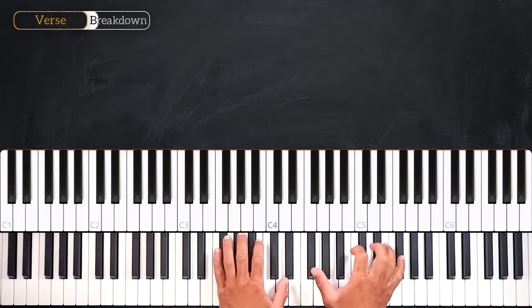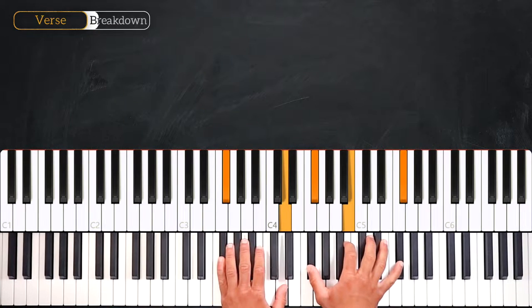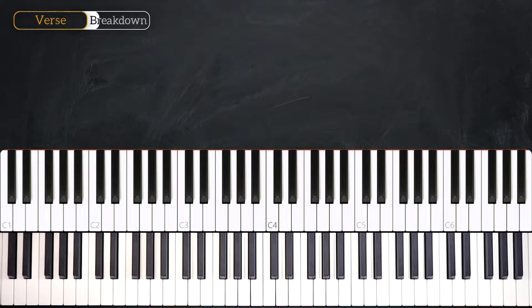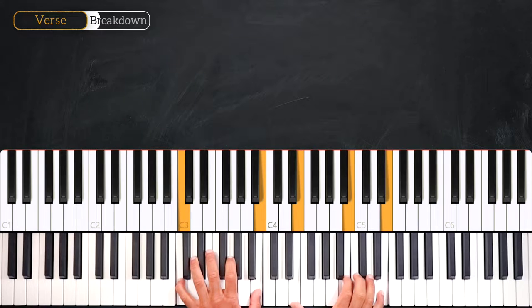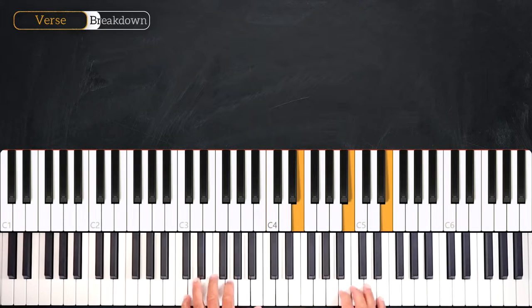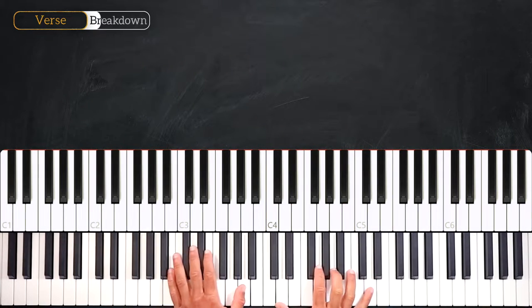Then we play B minor over F sharp. Then we'll play C major 7 into B minor 7.